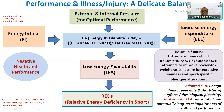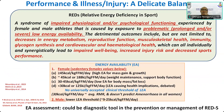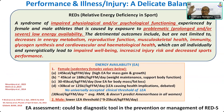When low energy availability is very excessive or present for a very long time, it may lead to problematic LEA, which is associated with substantial and potentially long-term impairment of health and performance. This will ultimately lead to what is known as REDS — relative energy deficiency in sports — which is a syndrome of impairment of physiological and/or psychological functioning associated with problematic low energy availability. The abnormalities may include decreased energy metabolism, reproductive dysfunction, musculoskeletal abnormality, immunity problems, glycogen synthesis problems, cardiovascular and hematological health impairment, which may individually or collectively lead to impaired well-being, increased injury risk, illness risk, and decreased sports performance.